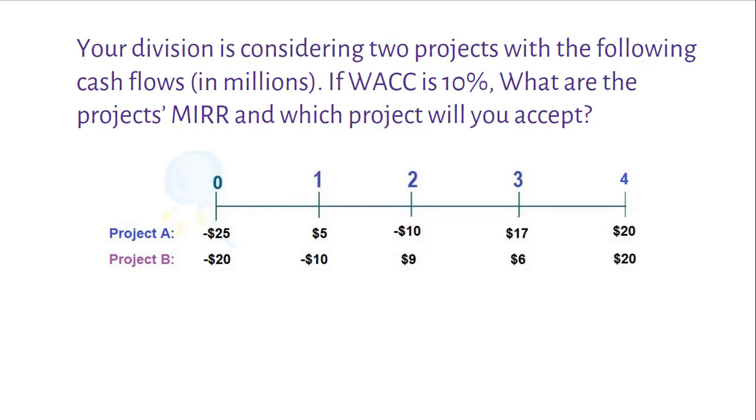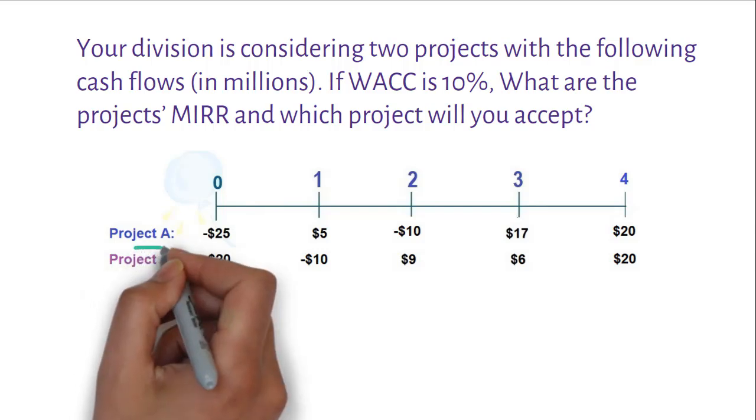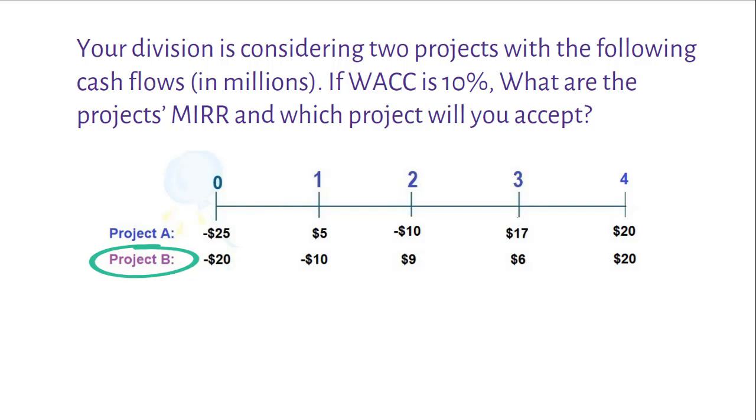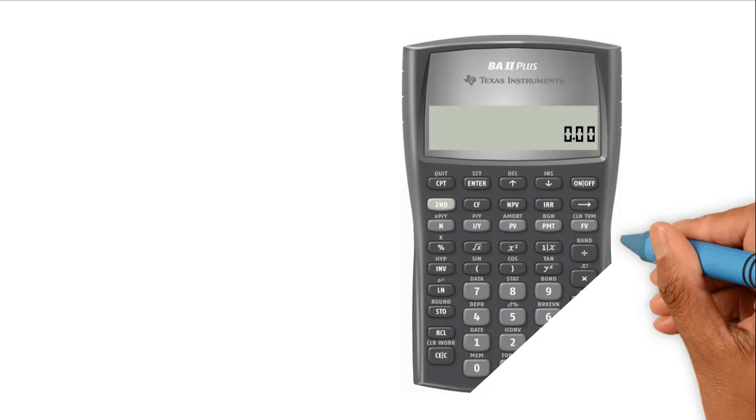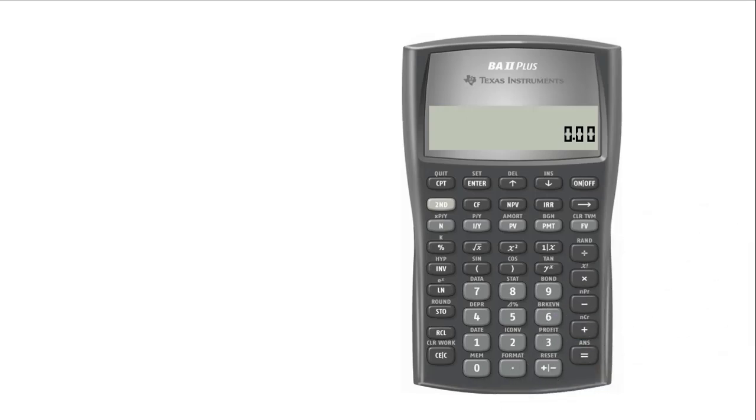I will show the calculation for project A and you can try project B on your own. Although you can solve some part of this problem manually, I am going to show the entire MIRR calculation using Texas BA2 Plus financial calculator.